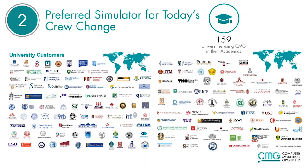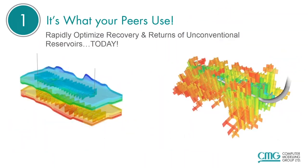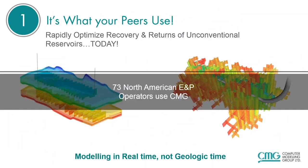And the number one reason for using CMG in unconventional reservoirs: it's what your peers use. Today we have 73 North American operators using CMG to rapidly optimize recovery and returns of unconventional reservoirs. The turnaround time is quite extraordinary using our automated workflows, turning around results within days, not months and not years.